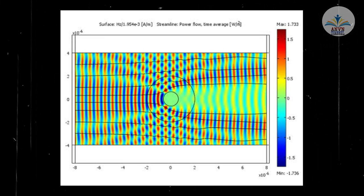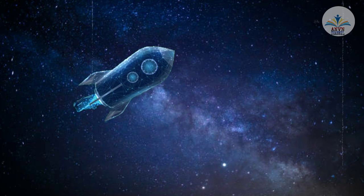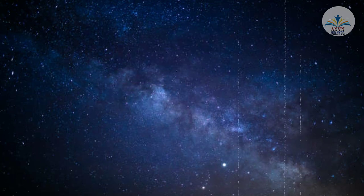Number three. A cloaking device is a hypothetical technology that causes objects such as spaceships to be partially or absolutely invisible to parts of the electromagnetic spectrum.